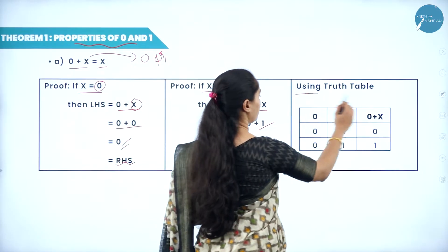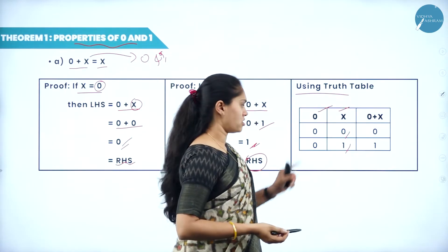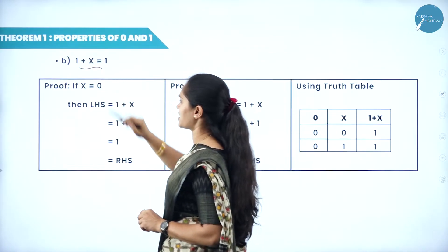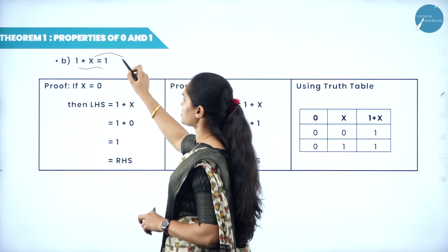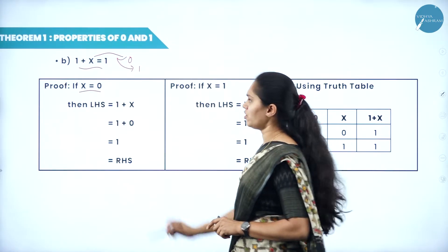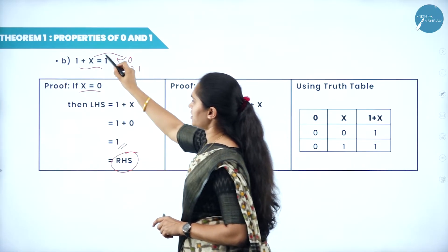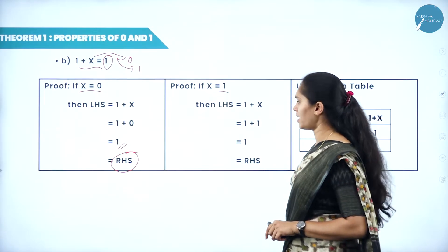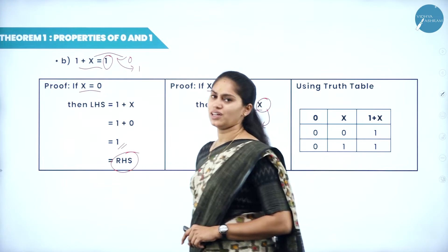Next: 1 plus x equals 1 — if I add any number with 1, I get 1. Proof: when x equals 0, 1 plus 0 equals 1, which equals RHS. When x equals 1, 1 plus 1 equals 1, which equals RHS. Then: 0 into x equals 0 — anything multiplied with 0 is 0. Proof: when x equals 0, 0 into 0 equals 0; when x equals 1, 0 into 1 equals 0. The truth table shows 0 into 0 is 0 and 0 into 1 is 0.